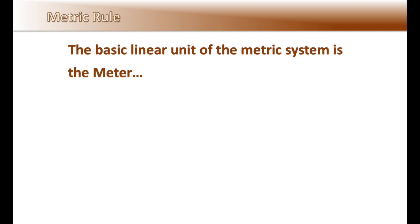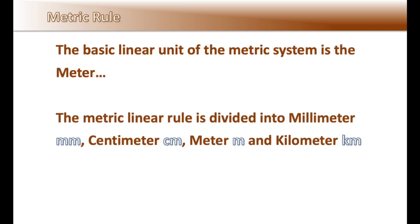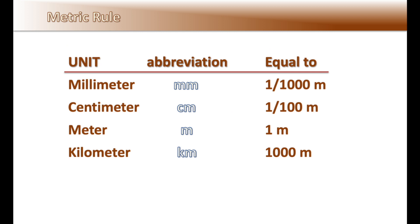The basic linear unit in the metric system is the meter. The metric linear units are broken down into millimeters (MM), centimeters (CM), meters (M), and kilometers (KM). Millimeters is one one-thousandth of a meter, meaning there are one thousand millimeters in one meter. Centimeters is one one-hundredth of a meter, meaning there are one hundred centimeters in one meter. And a kilometer equals one thousand meters.